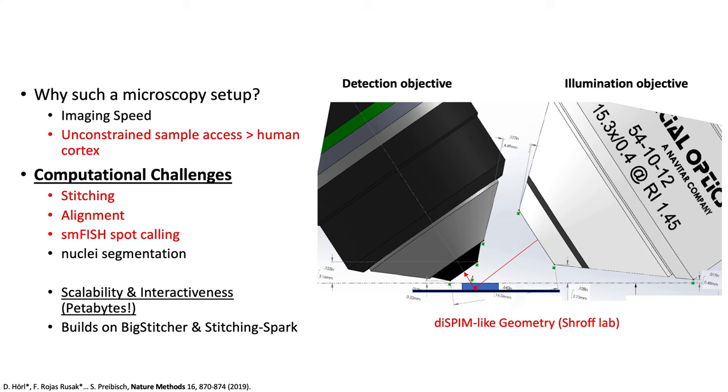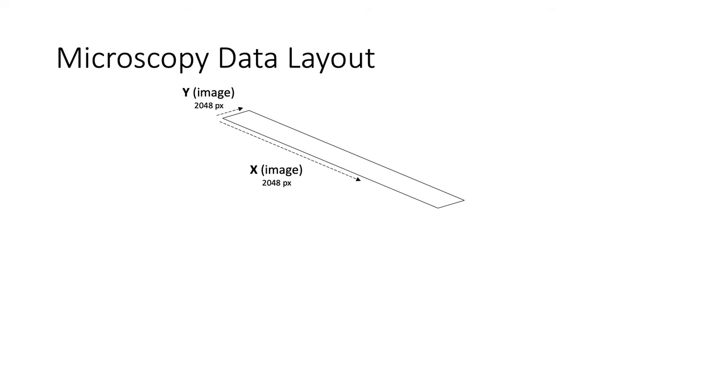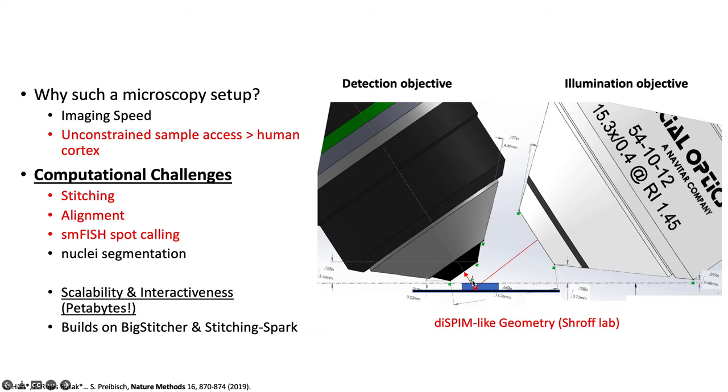Important for us is that this scales and is interactive to the petabyte range. This also means it's going to be exciting for mesoSPIM because it can be very large and BigStitcher comes to the edge of what works well on the workstation. I think this development will benefit also samples that are in the lower terabyte range because it will make your life much easier.